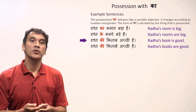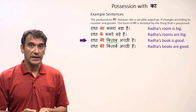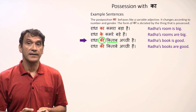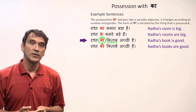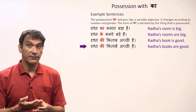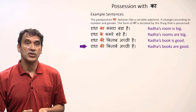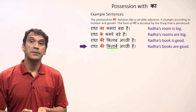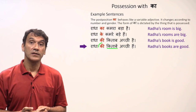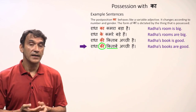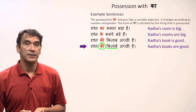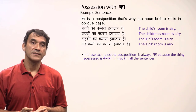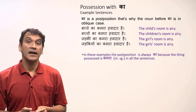Radha ki kitab achhi hai — Radha's book is good. 'Kitab' is feminine singular, so the post position is 'ki': radha ki kitab. Radha ki kitaben achhi hai — Radha's books are good. 'Kitaben' is feminine plural, and just like singular, it is 'ki': radha ki kitaben.